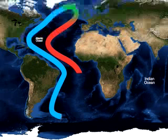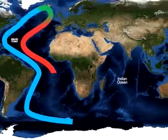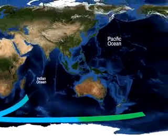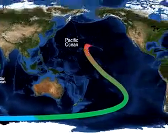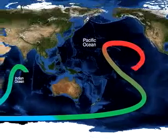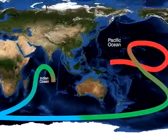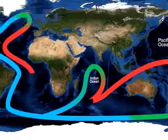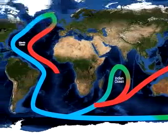This deep water is pushed out into the Indian and Pacific oceans, where fresh rainwater dilutes the warming water as it rises. Winds and the Earth's rotation push the water back into the Atlantic where it began.